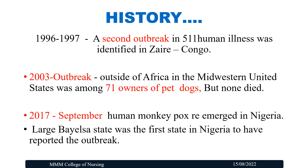During 1996 to 1997, the second outbreak of monkeypox occurred. During that time, 511 human illnesses were identified in Zaire, Congo. In 2003, the next outbreak happened outside of Africa, in the Midwestern United States, among 71 owners of pet prairie dogs, but none died. In September 2017, human monkeypox re-emerged in Nigeria. Bayelsa state was the first state in Nigeria to report this outbreak.